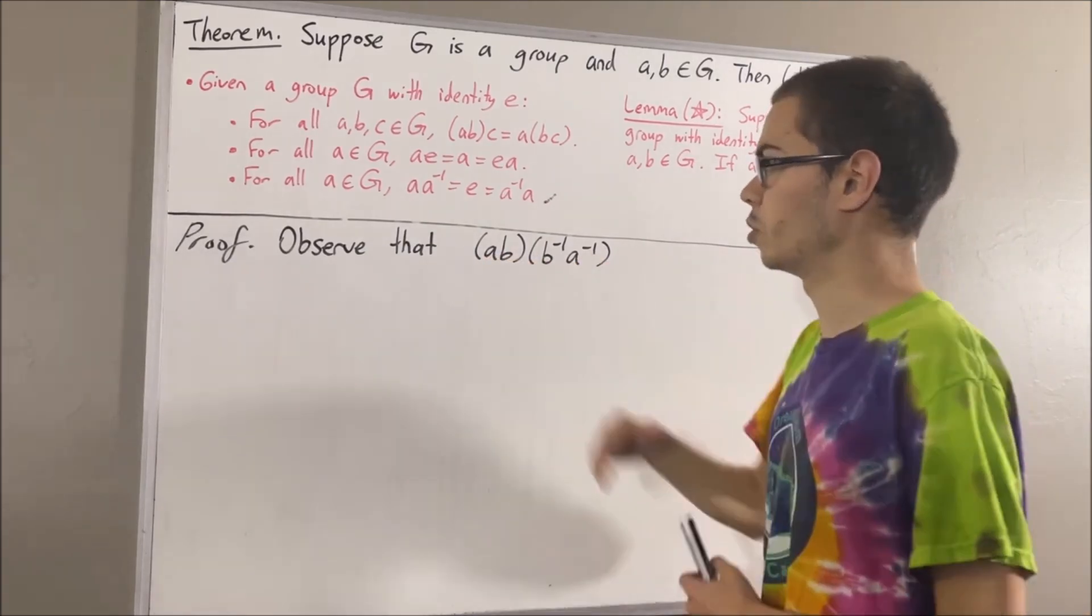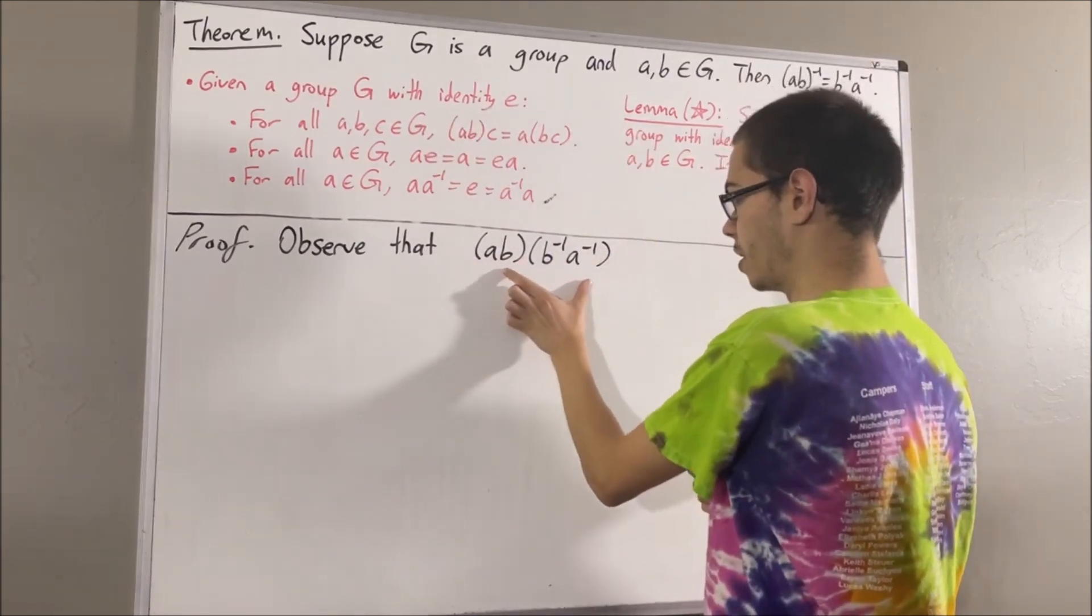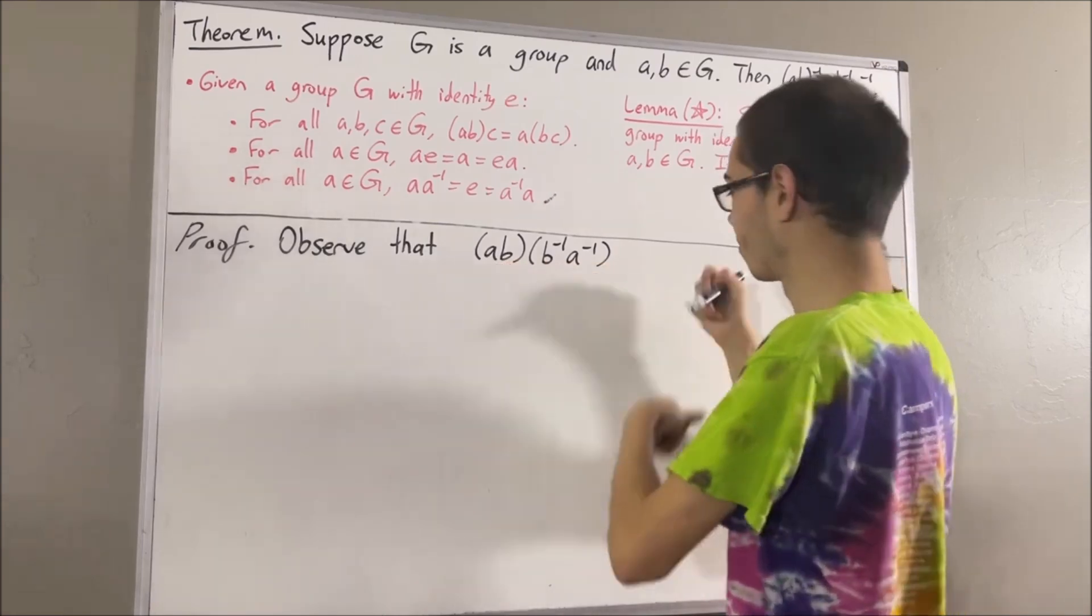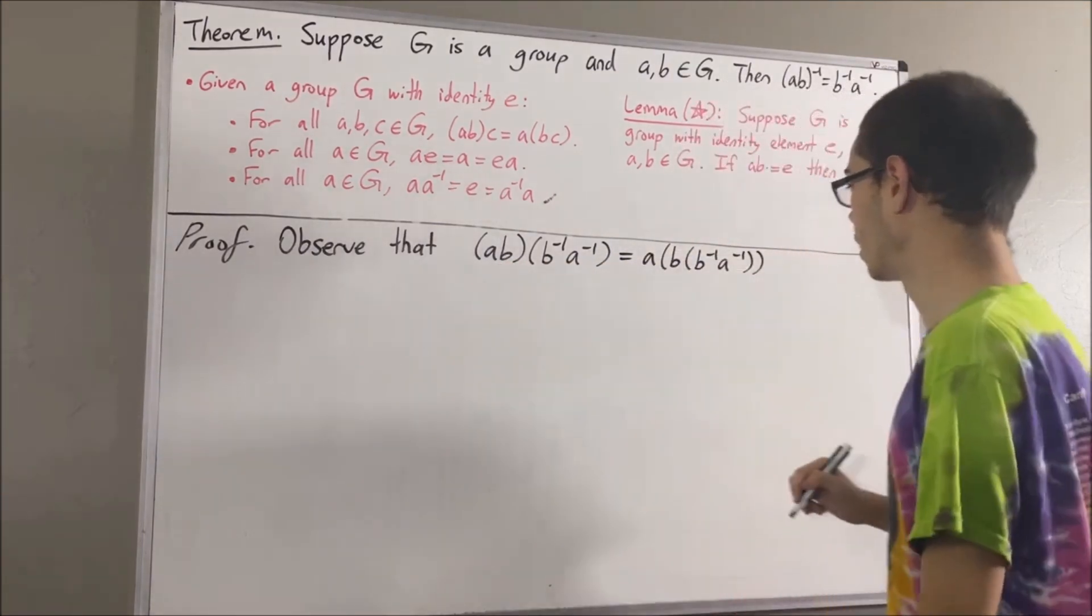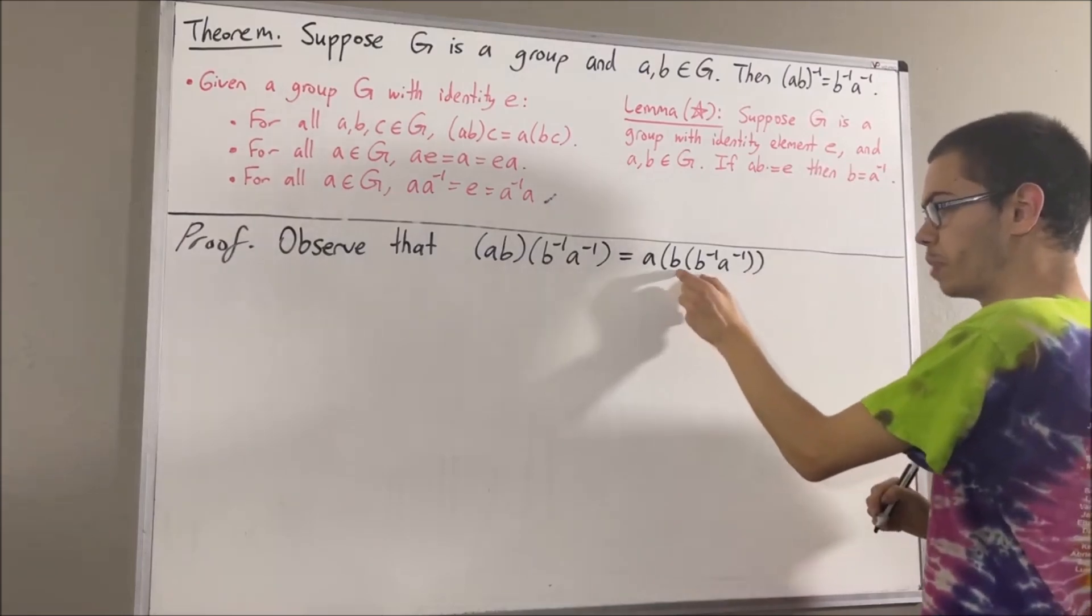So, to start out, let's use associativity. We can move these parentheses around B and B inverse A inverse. And then, using associativity again, we can move the inner parentheses around B times B inverse.